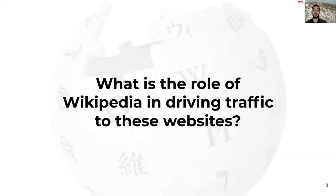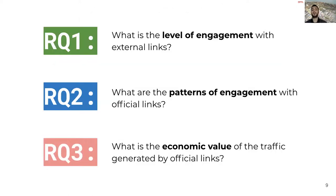Now the big question is: what is the role of Wikipedia in driving traffic to these websites? We approach the question of Wikipedia's value as a gateway to the web from two angles — informational and economic. In practice, we aim to answer this by exploring three directions: first, we quantify the level of engagement, basically if these links are used at all; second, we explore what patterns are associated with more or less clicks; and finally, we give an estimation in economic terms of the traffic received through Wikipedia.